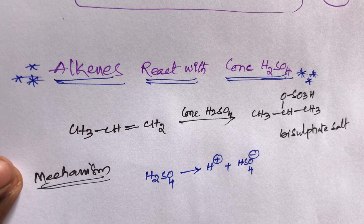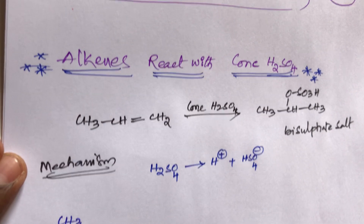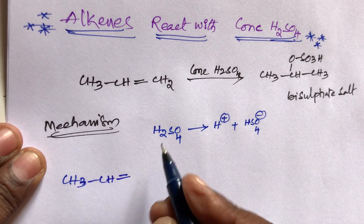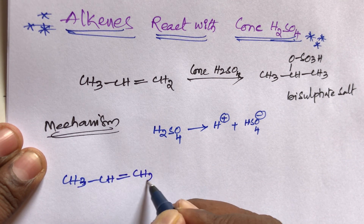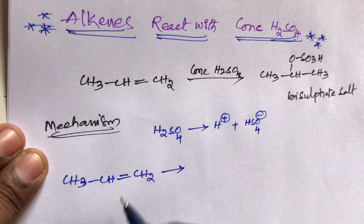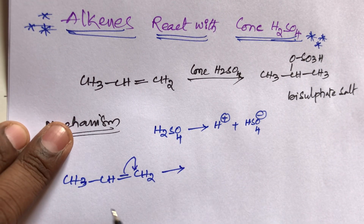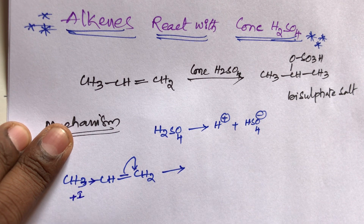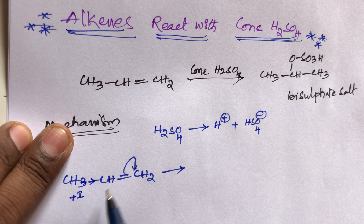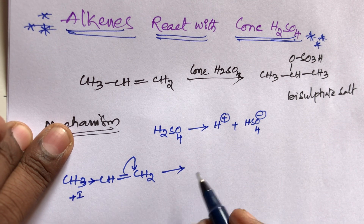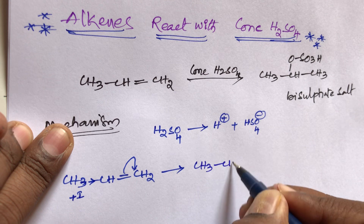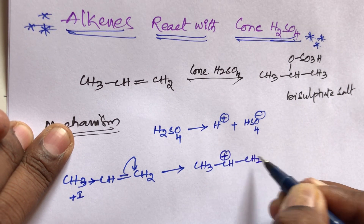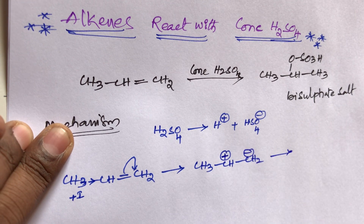In the first step, for CH₃–CH=CH₂, the pi bond breaks. The bond shifts towards the right-hand side because the +I group on the left side is electron-releasing, pushing electrons to the right. So this bond shifts rightward.